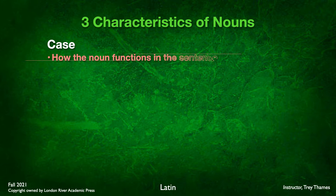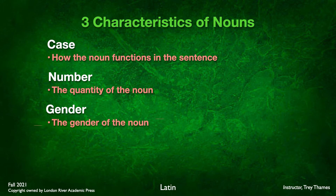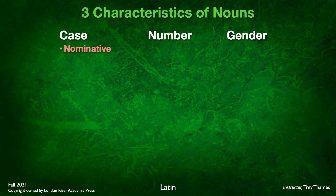There are three characteristics of nouns. We have case, which is how the word functions in the sentence; number, which is the quantity of the noun, either singular or plural; and then gender. It's the categories they put words in: masculine, feminine, or neuter.